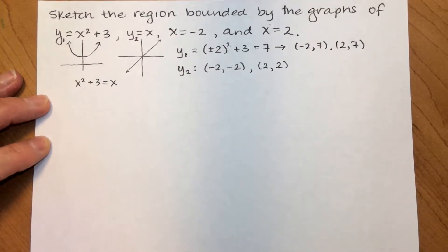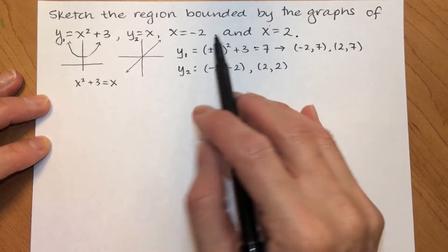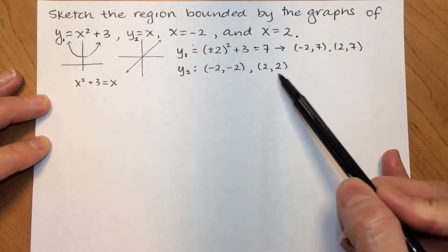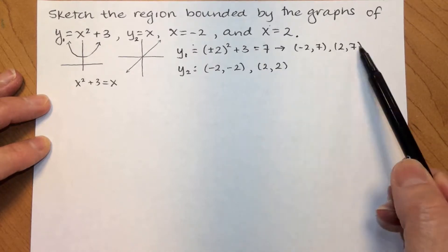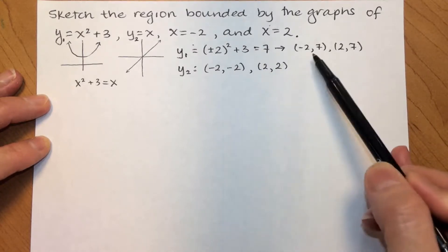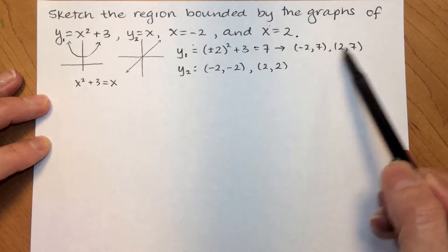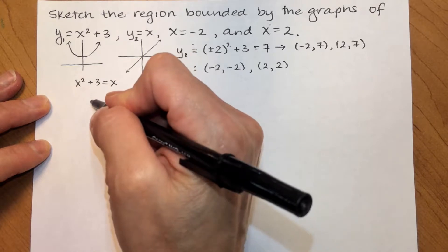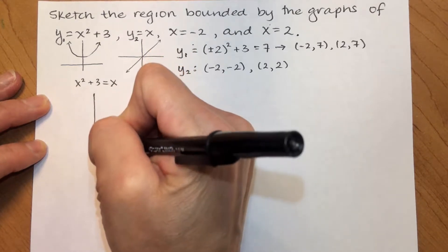Okay. So, I'm going to set up my graph. My x-axis needs to go from negative 2 to 2. My y-axis, the lowest number I see in my y values is negative 2. The biggest number I see is 7. So, my y-axis needs to go at least from negative 2 to 7.